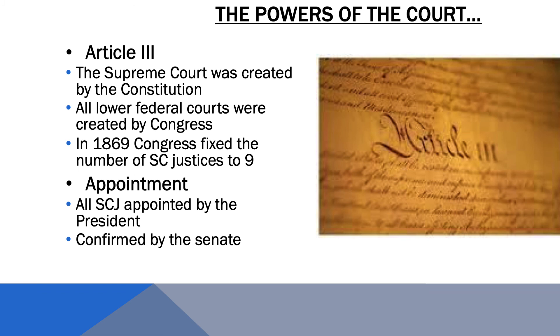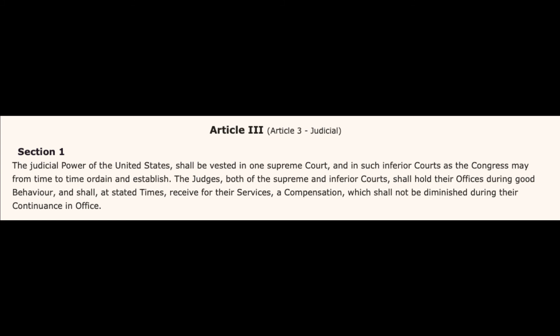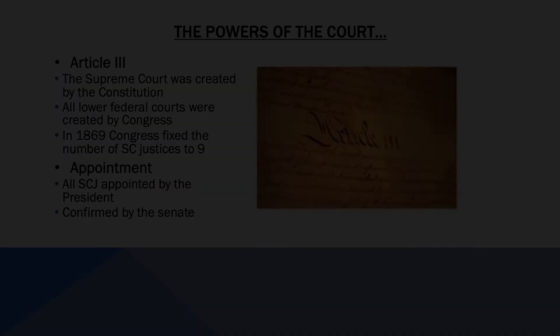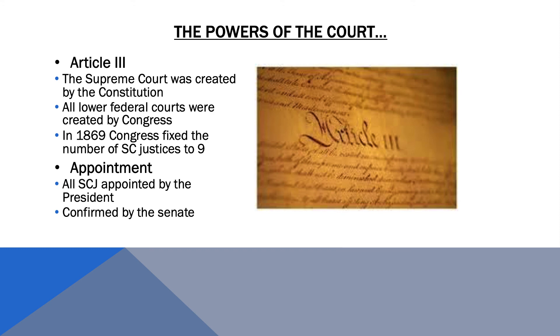The Constitution doesn't even grant the Supreme Court the power to overturn laws made by Congress or the states. The only thing the Constitution actually says about the Supreme Court's actual power is: 'The judicial power of the United States shall be vested in one Supreme Court and in such inferior courts as the Congress may from time to time ordain and establish.' This would later cause some significant confusion over what the Supreme Court could and could not actually do.